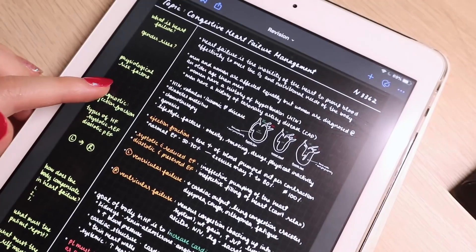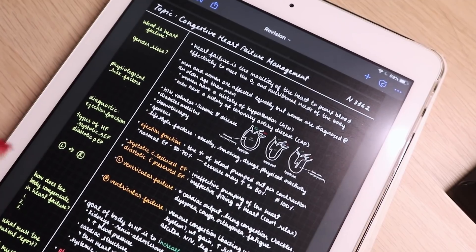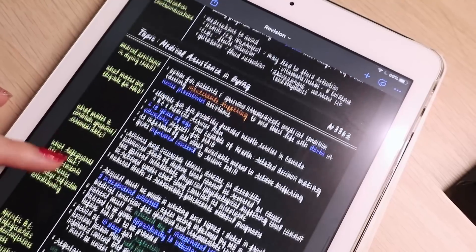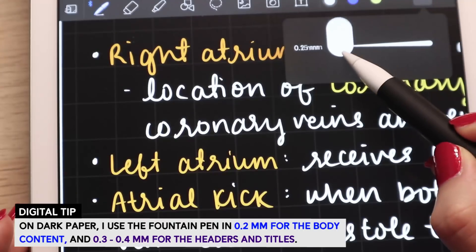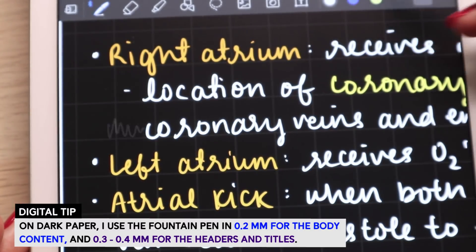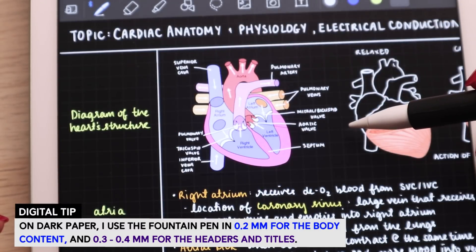So the question of what pen size I use. I have a few pen sizes that I like to use. In my most recent notes with the dark paper, I've been using 0.2 millimeters for the body of my notes. For my headings and titles, I typically use 0.3 to 0.4 millimeters.